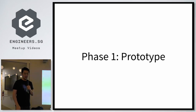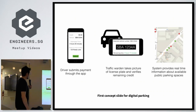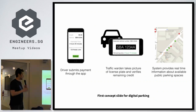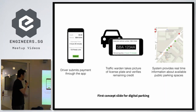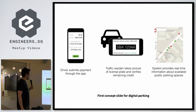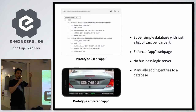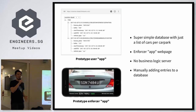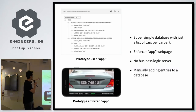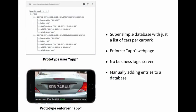Phase one is the prototype. This right here is the first ever concept slide for digital parking. It was done as part of a series of slides brainstorming ideas we could do in the government to help make people's lives better. It sat on the shelf with a bunch of other ideas for about two years until 2016 where we built this — the first ever working prototype app of parking.sg. It is barely an app at all. We literally just had a Firebase database that we manually edited and added entries into as the user app, and then a crappy enforcer app that just checked whether the license plate number was in the database. That was the whole app.